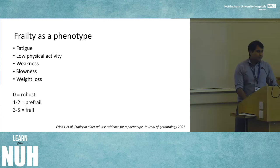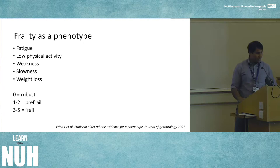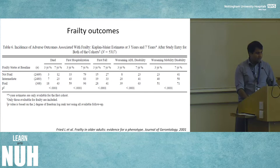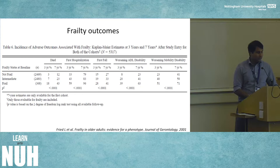Linda Fried's model defines frailty as a phenotype across five domains: fatigue, low physical activity, weakness, slowness, and weight loss. If you have none of those you're robust; one or two places you in the interesting category of pre-frail, where interventions may potentially reverse frailty; three or more means you're deemed frail. Data from the same 2001 paper showed that people who are frail are more likely to die, be hospitalised, have a fall, or experience functional decline over a three-to-seven year retrospective study.